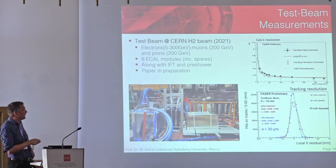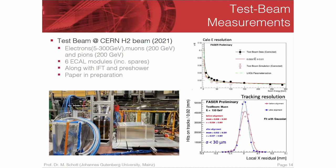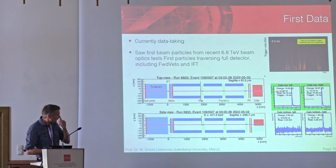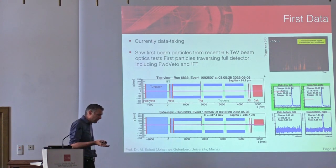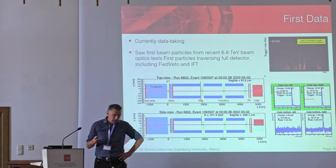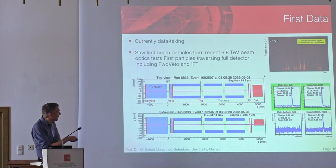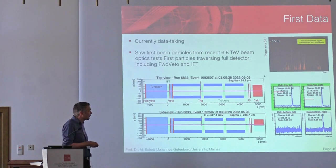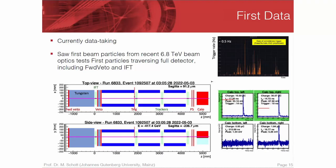Just a brief word on the testing measurements. In 2021 we did test beam measurements of all individual components, in particular the tracking component and the calorimeters, just to double-check if the performance we had from ATLAS and LHCb was still correct. What we see actually looks perfectly as expected, and the paper is currently under preparation. The LHC Run 3 started a few weeks ago, and what we see here is one of our first muon events going through the detector — top view, side view — and as expected, a straight line.